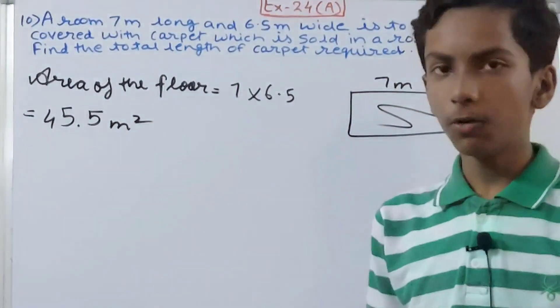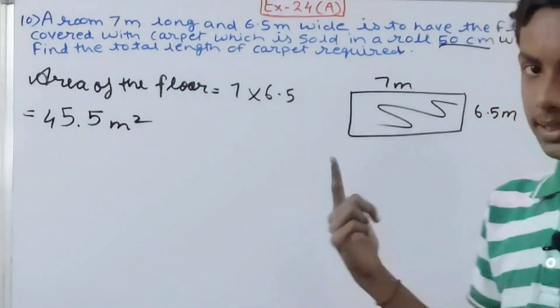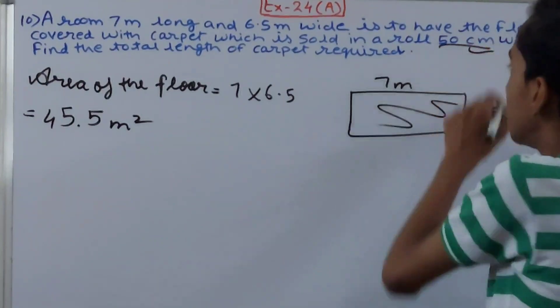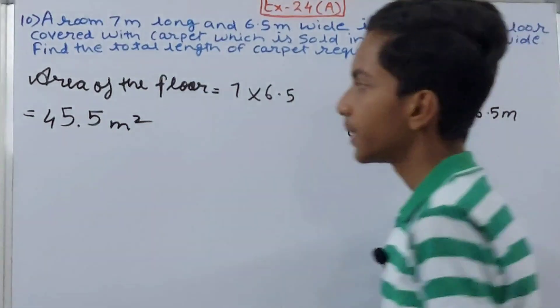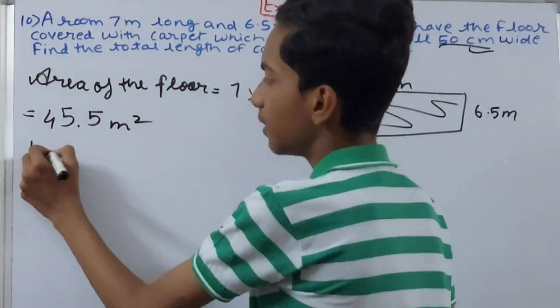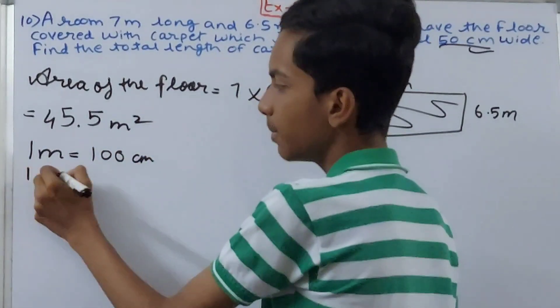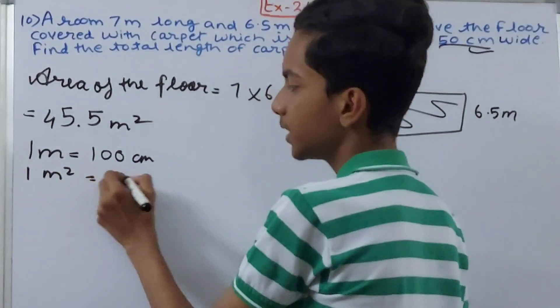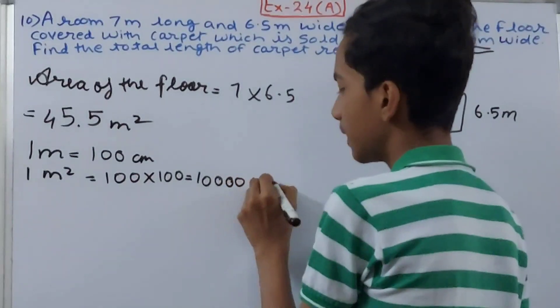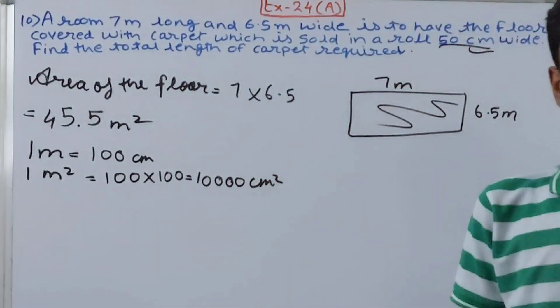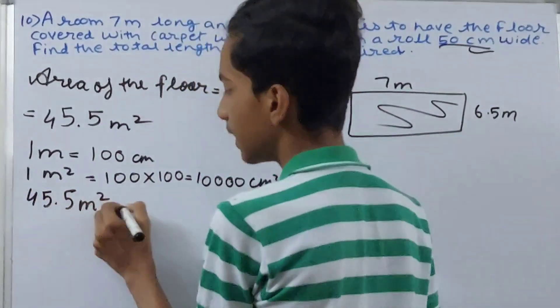Now we are going to convert this into square centimeters, because this is in centimeters, so this also has to be in centimeters. We know that 1 meter has 100 centimeters. In 1 square meter there will be 100 into 100 - that is 10,000 square centimeters.